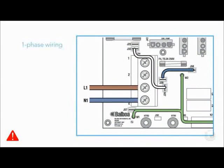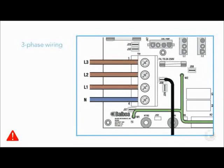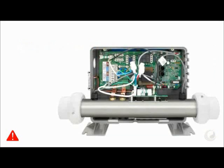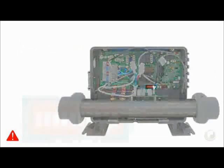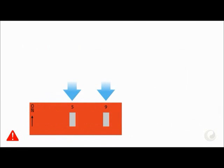This diagram shows one phase wiring, and this diagram shows three phase wiring. DIP switches 5 and 9 in combination determine how Pump 1 and the Circulation Pump operate.